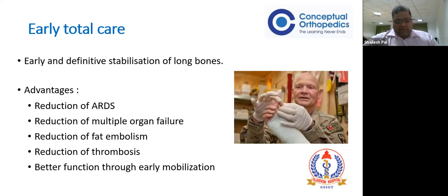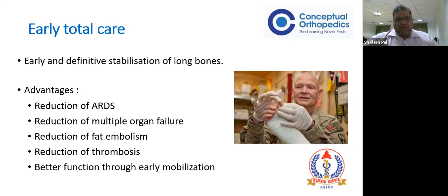What they suggested was early and definitive stabilization of long bones - specifically only the axial long bones. The proposed advantages were: it reduced ARDS because once patients were out of bed they could be rehabilitated better. Reduction of ARDS equals reduction in chances of multiple organ failure. Fat embolism was lesser because they used unreamed nails, and in conservatively treated patients the constant movement of femur fractures led to fat embolism. Mobilization reduced deep vein thrombosis, and overall these patients had better function. So the dictum was early total care - go in early and definitively fix all long bones.